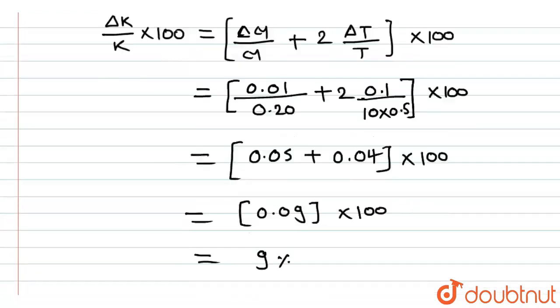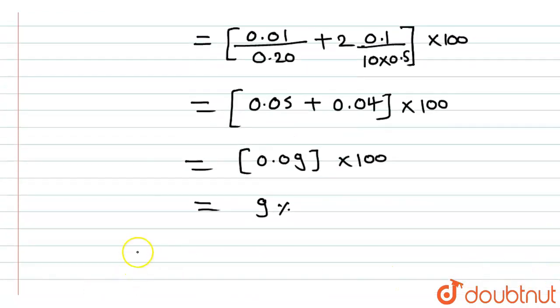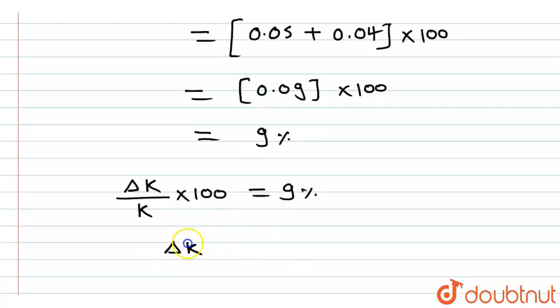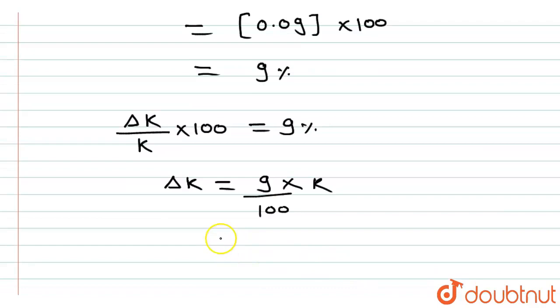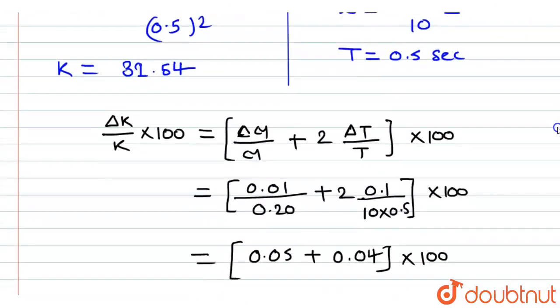And if we have to calculate the error in the measurement of spring constant, then it will be ΔK/K × 100 equals 9%. Now, here ΔK will be equal to 9 divided by 100 into K.